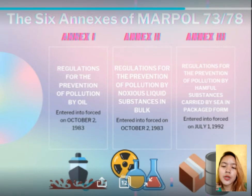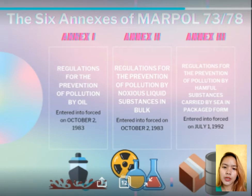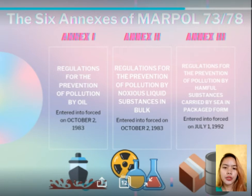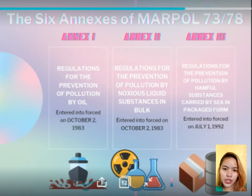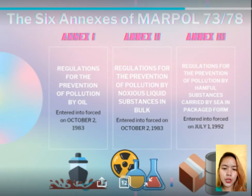Annex 3 covers the prevention of pollution by harmful substances carried by sea in packaged form, and entered into force on July 1, 1992. It sets general requirements for issuing detailed standards on packing, marking, labeling, documentation, stowage, quantity, limitation, exceptions, and notifications.